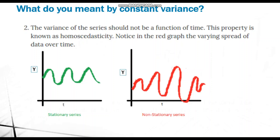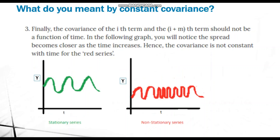Constant variance means when you plot the time series the spread or variation around the line should be consistent. In the stationary (green) graph, the spread is equal throughout. In the non-stationary (red) graph, the spread varies — wide in some areas and very narrow in others. This inconsistent spread indicates the covariance is not the same, making it non-stationary.